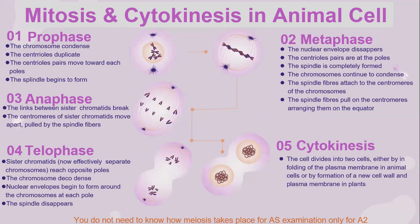Let's look into the phases of mitosis and cytokinesis in animal cells. In prophase, the chromosomes condense and the centrioles duplicate. At this stage, the centriole pairs move towards each pole and the spindle begins to form. At metaphase, the nuclear envelope disappears, the centriole pairs are at the poles, the spindle is completely formed, and the chromosomes continue to condense. The spindle fibres attach to the centromeres of the chromosomes, and the spindle fibres pull on the centromeres, arranging them on the equator.